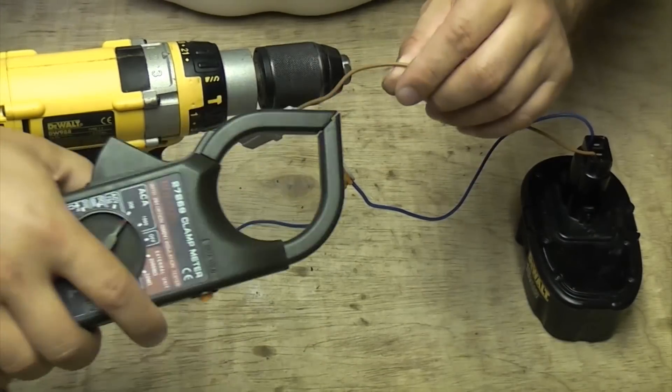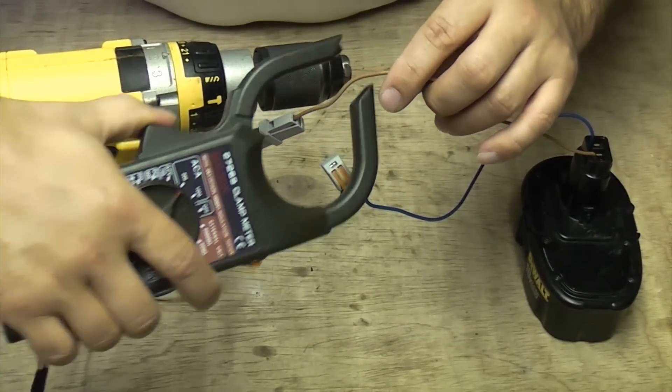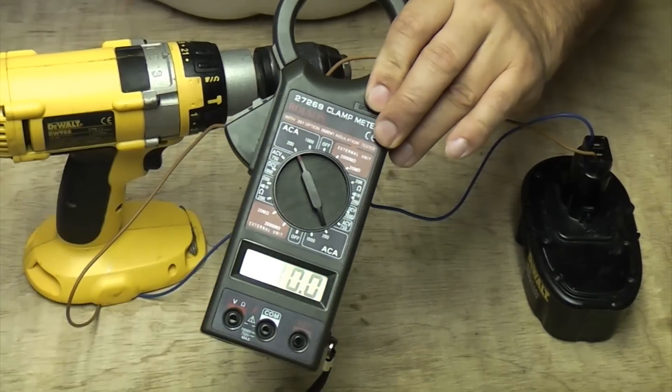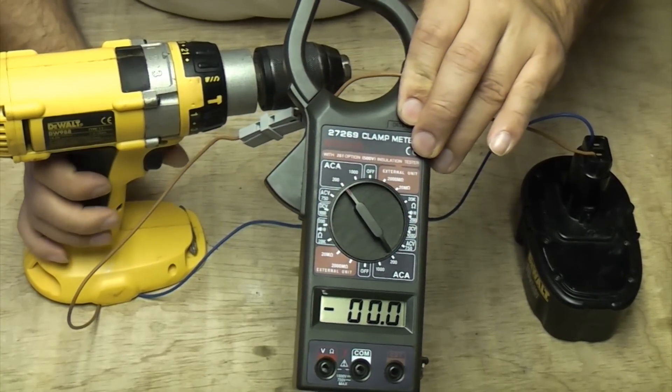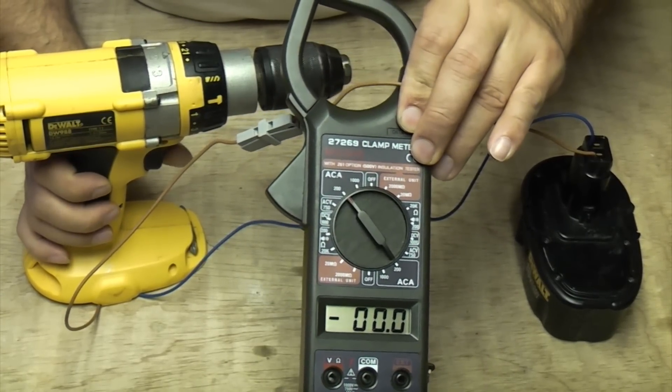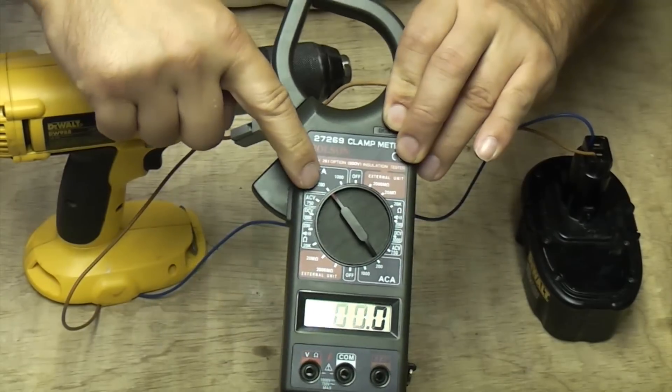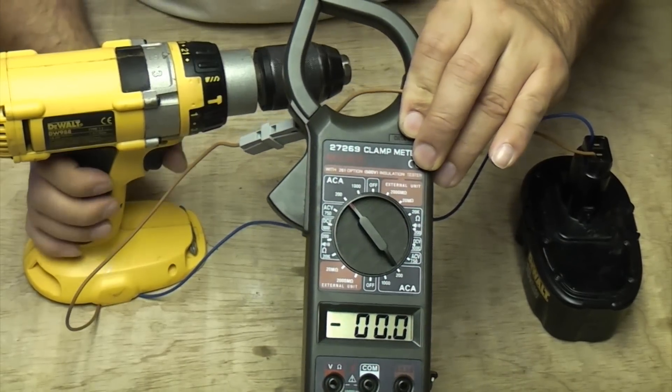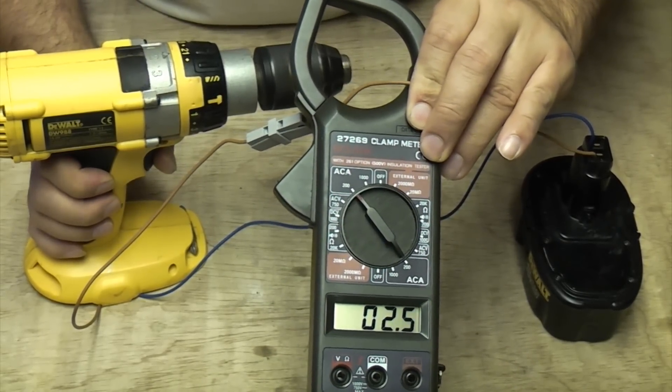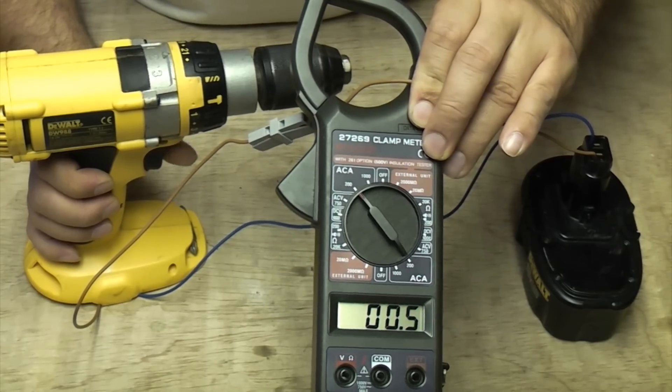So just to prove it I'll just take that over the positive side, and this will give us a false reading by the way because this is set to AC amps and we're measuring DC amps. You can see when you squeeze the trigger the amps go through.